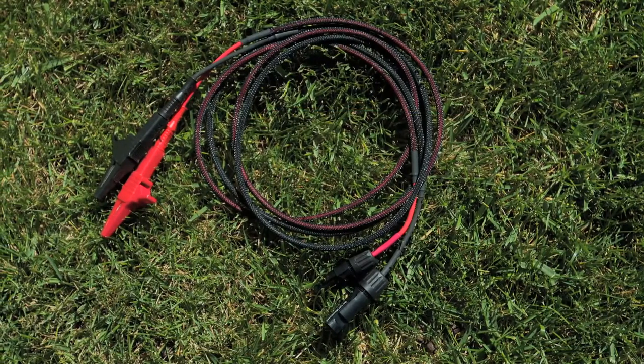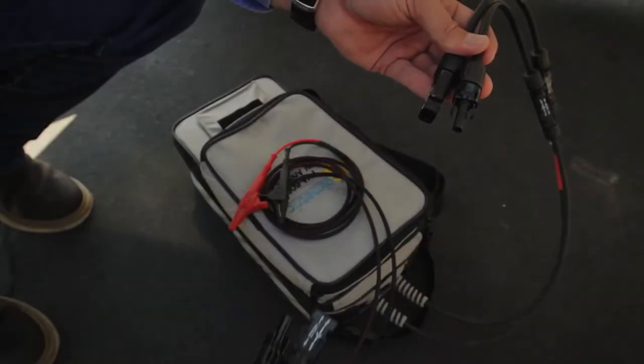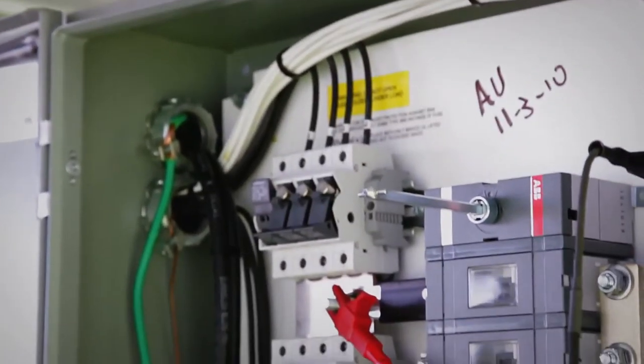Other optional accessories include PVA test leads and the wireless PVA sensor kit. The PVA test leads are five feet long and terminate in high current alligator clips.